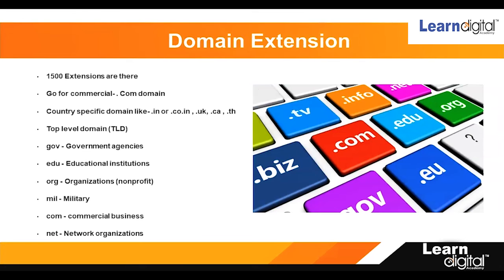The domain extension is what comes after your website name — like .com, .org, .edu, .info, .gov, or .in. There are more than 1,500 extensions throughout the world. The most common top-level domains are .com for commercial business, .gov for government agencies, and .edu for educational institutions. You can select and purchase the extension that fits your requirement.